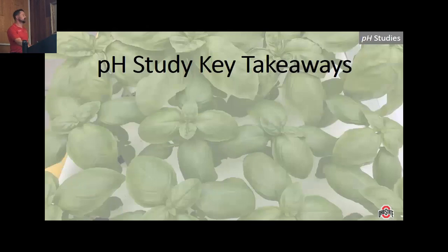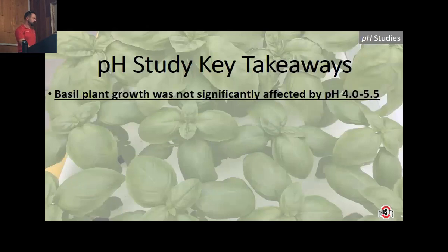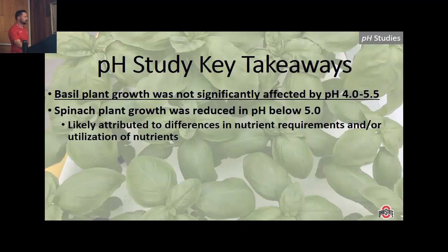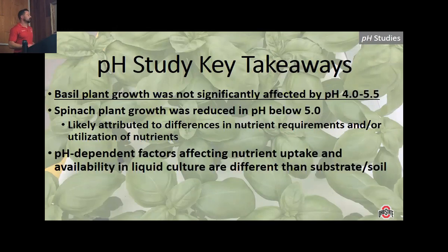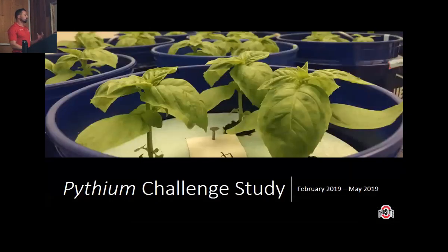To wrap up the pH study: basil growth was not significantly affected by pH 4.0 to 5.5, whereas spinach growth was reduced below pH 5.0. This is likely attributable to species-specific nutrient requirements, with basil's seemingly low nutrient requirement responsible for its tolerance to acidity. We also learned that the pH-dependent factors affecting nutrient uptake and availability in liquid culture hydroponic systems are different from those in substrate or soil systems. With basil able to grow at pH 4.0 without growth reductions, the next step was to perform the Pythium challenge study.